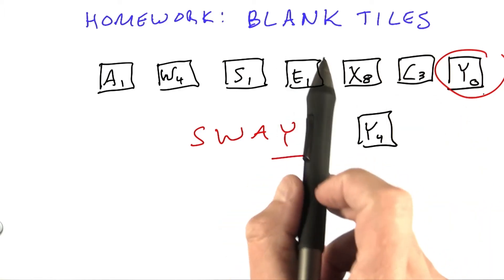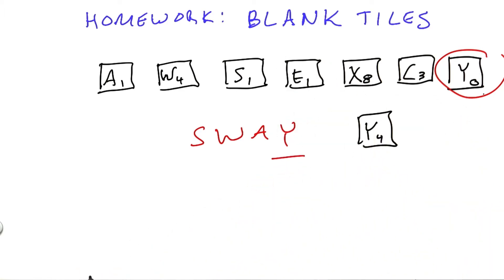So we have a question of how we're going to represent the blanks. I'm going to make some of that choice for you. I'm going to say that in the hand, which is a string of 7 characters, the blank tile is going to be represented by an underscore.